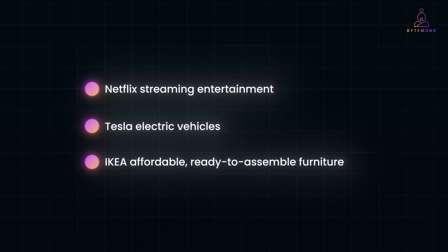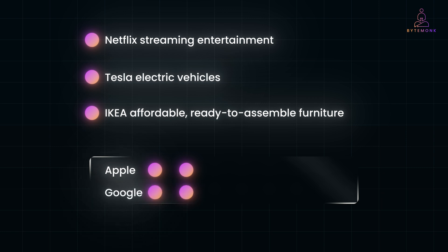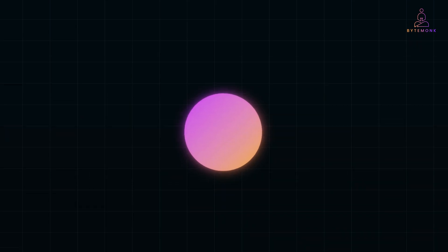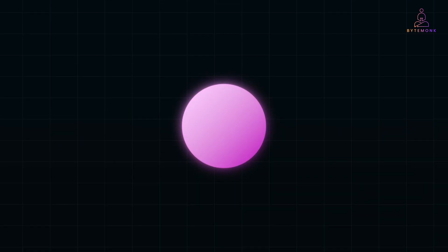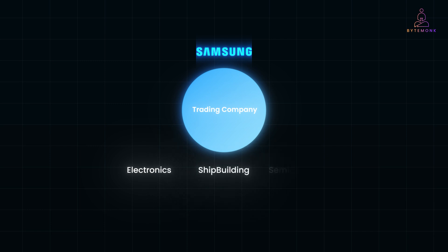Some companies operate across multiple business domains. For instance, Apple delivers both consumer electronics and digital services such as the App Store and Apple Music. Google is involved in search engines, online advertising, and cloud computing, among other areas. Business domains can evolve over time as companies adapt to new opportunities. Take Samsung as an example — it started as a trading company and has since diversified into electronics, shipbuilding, and even semiconductors.